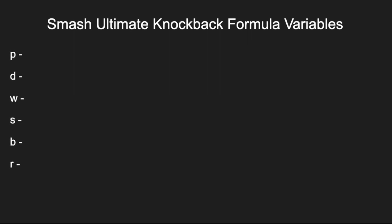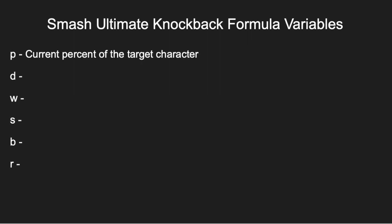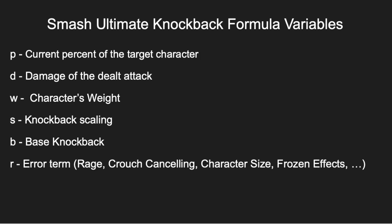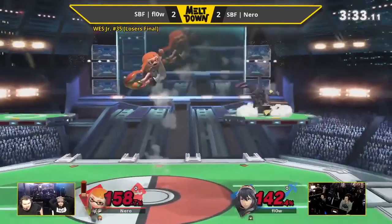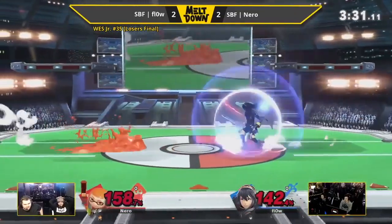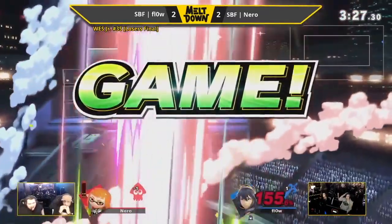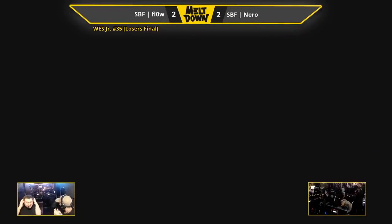The specifics of each variable will be discussed later. P is the current percent of the character receiving the knockback, which will now be referred to as the target. D is the damage of the attack dealt. W is the character's weight. S is the knockback scaling value of the move. B is the move's base knockback. And R is a term that refers to various factors, which will be discussed later.